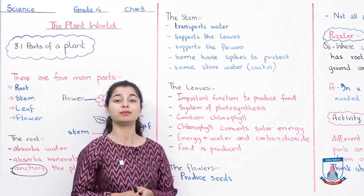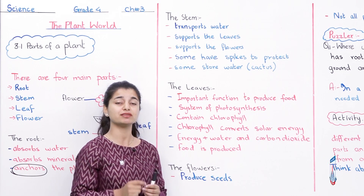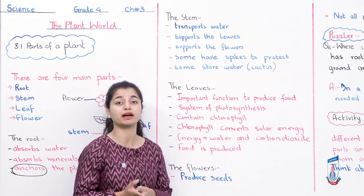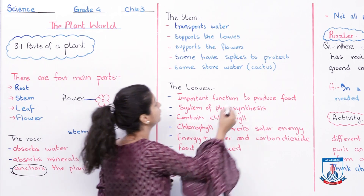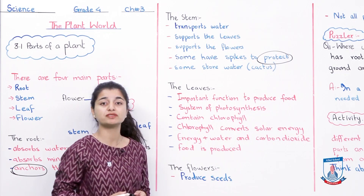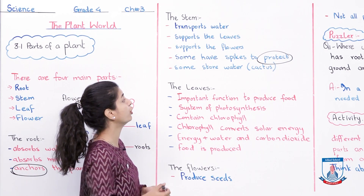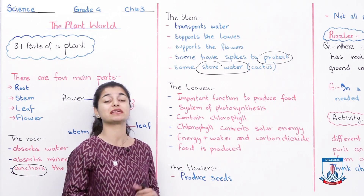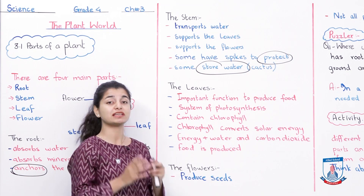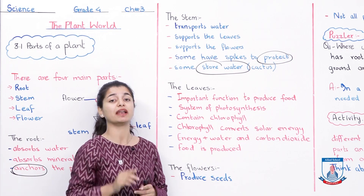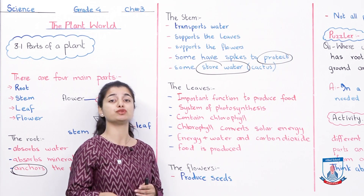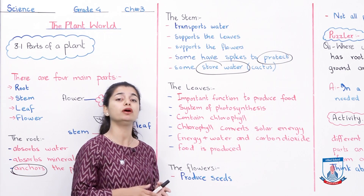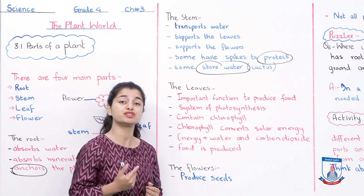There are other functions of stem as well. Some stems have spikes to protect the plant — like the stem of a rose. If any animal comes to it, the spikes stop them from disturbing or hurting the plant. So the stem also serves the purpose of protection. Additionally, some stems store water — like in a cactus, the whole stem stores water. Because of this, a cactus doesn't need frequent water and can survive in dry areas.